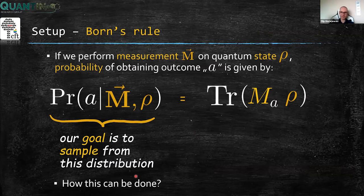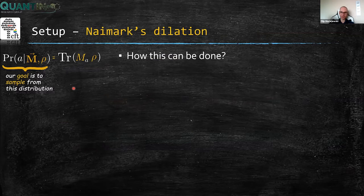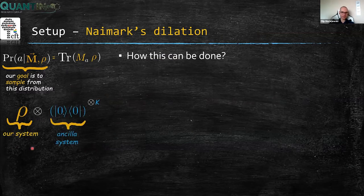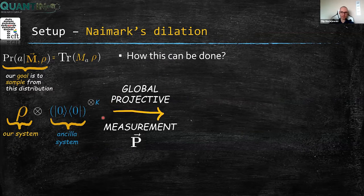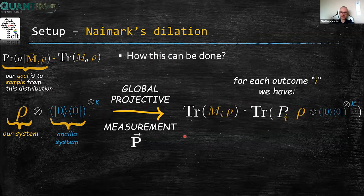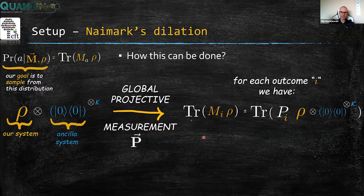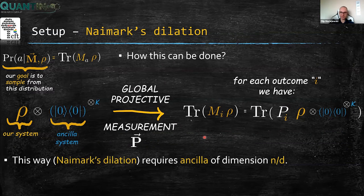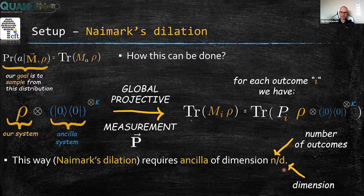So, how can this be achieved? The standard setup is the following: we have our system ρ, we attach some ancillary system, and perform a global projective measurement on the joint system. If this projective measurement was constructed such that the probabilities agree with our target distribution, then we have implemented this POVM using a projective measurement on a bigger Hilbert space. The fact that this can always be done is known as Neymark's dilation theorem, and in its standard version it requires an ancilla of dimension N divided by D, where N is the number of outcomes and D is the dimension. The number of outcomes can be very large, so this can require a lot of additional quantum resources.